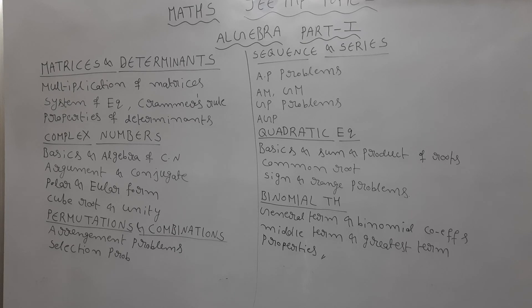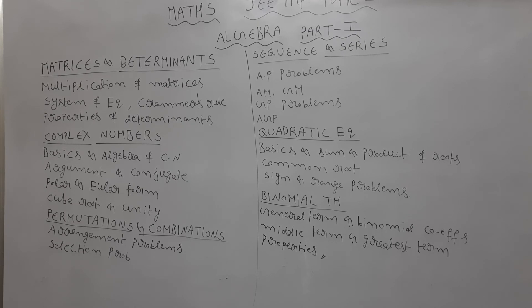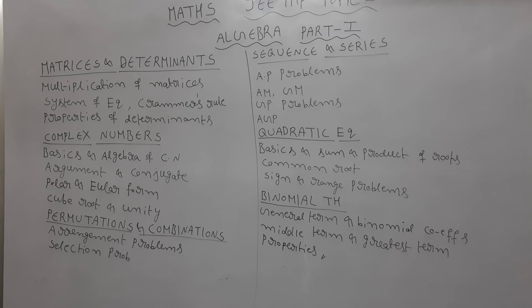Next, binomial theorem. General term. Suppose x plus a whole to the power of n, in this expansion, general term is t r plus 1 is equal to nCr x power n minus r into a power r. Next, binomial coefficients and middle term and greatest term and properties. Here standard properties are there, so you have to more concentrate on that properties also.